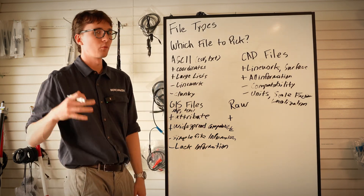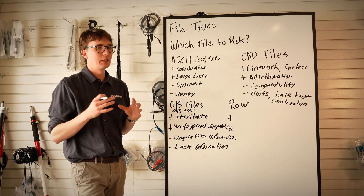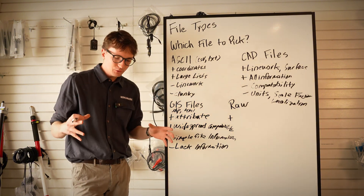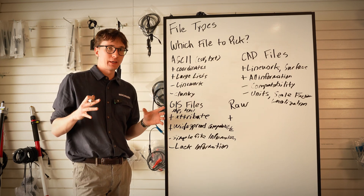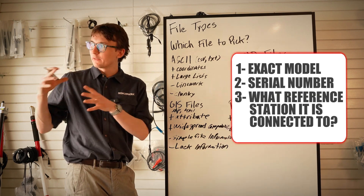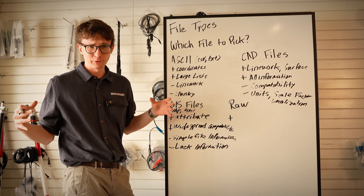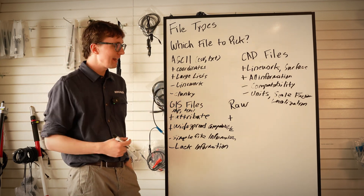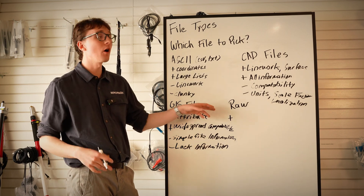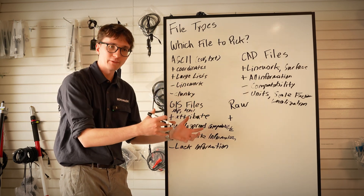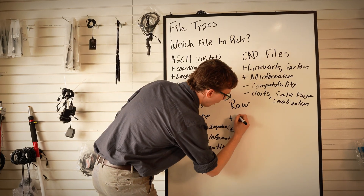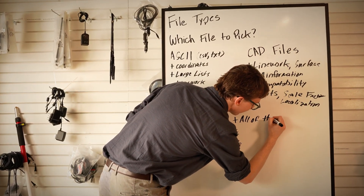The last file type is RAW files — the most specialized of the four. It's the black box of your project. If you're out doing a survey, your raw file records everything you do: the exact model of your antenna, the serial number, what reference station it connected to, the points collected, and for total stations all of the traverse information. A big bonus is that if you ever run into issues you can trace them back in the raw file — you know exactly where you went wrong — and more often than not you can reprocess your data from the office to avoid a costly return to the field.